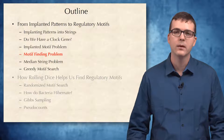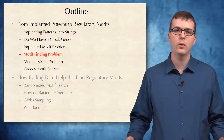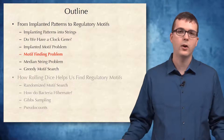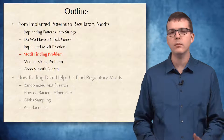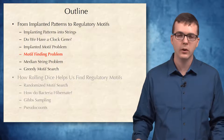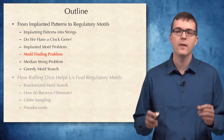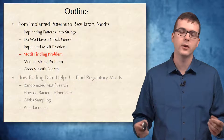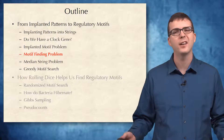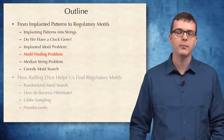In the last section, we saw that the motif enumeration algorithm we proposed had a flaw. It assumed that the motif we are looking for must occur in every string in the collection of strings under consideration, which is not necessarily true in biological applications.